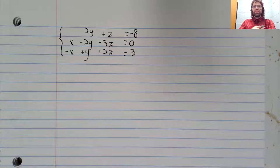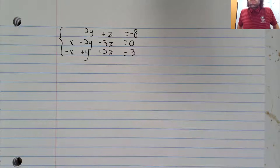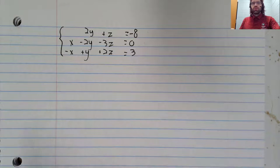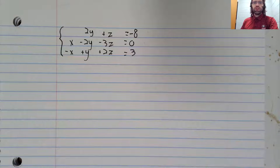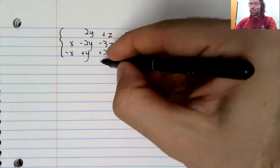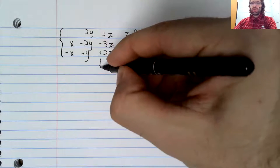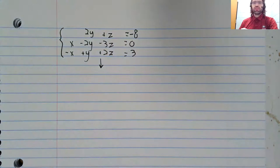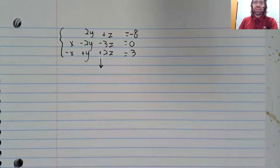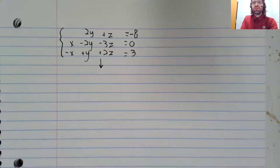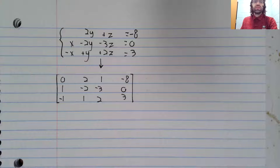We'll do this via example. So here's a system of linear equations. Let's put its augmented matrix into row echelon form. So its augmented matrix is this.